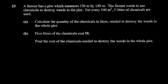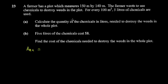This is called direct variation. As you increase the area, you also have to increase the number of liters of chemicals used. In order to calculate the quantity of chemicals used, you first have to calculate the area.